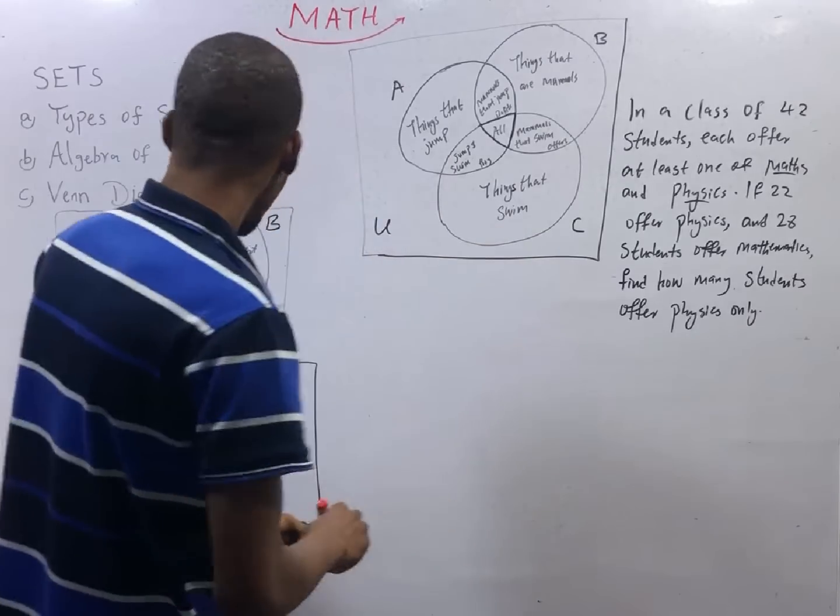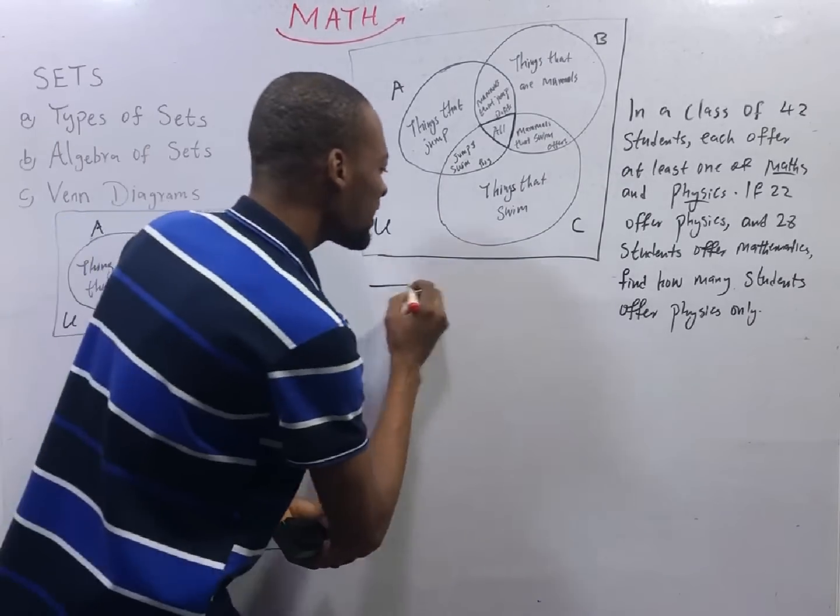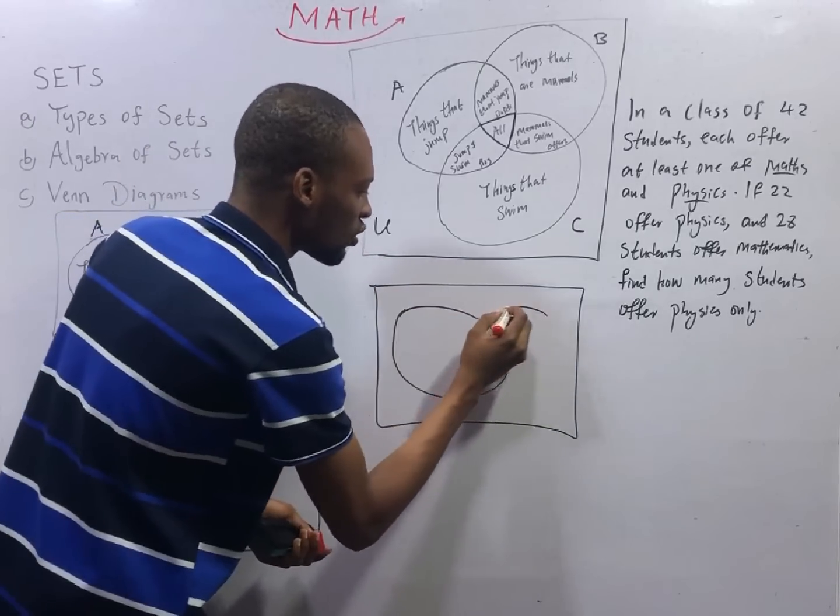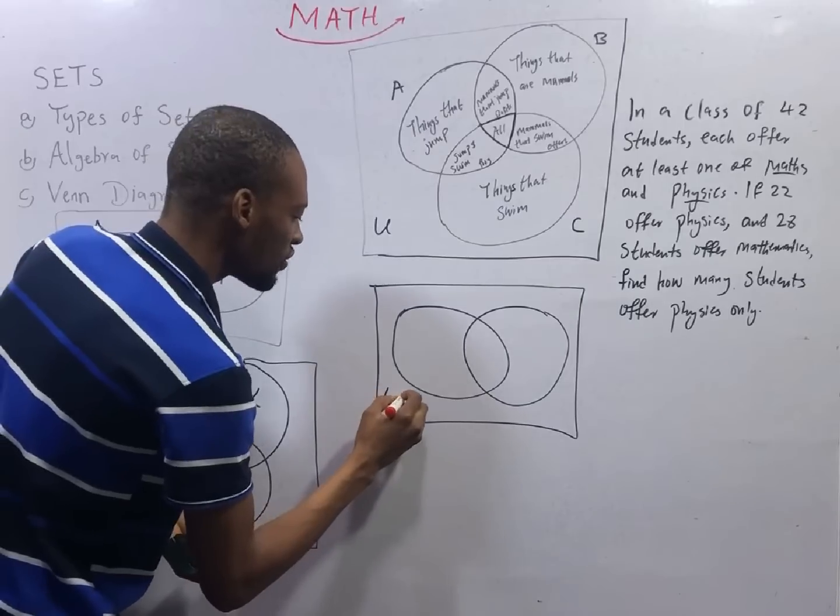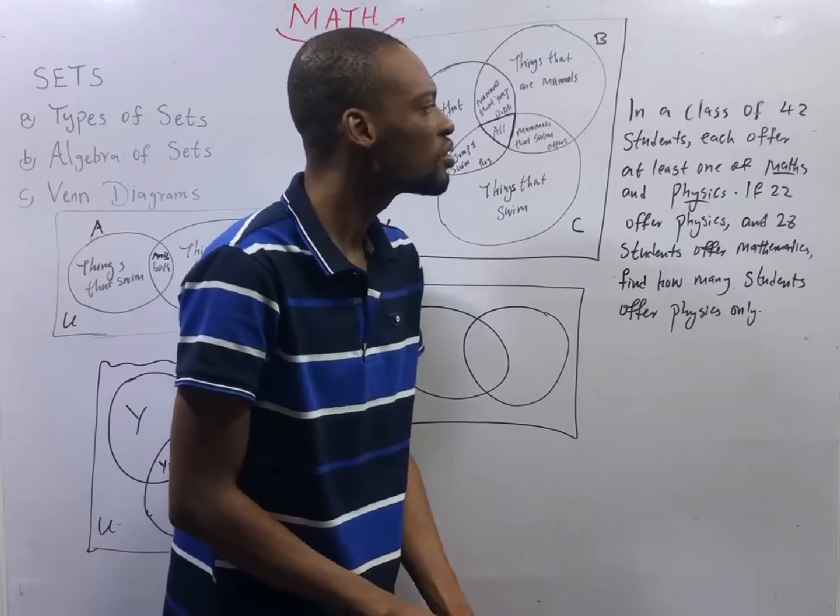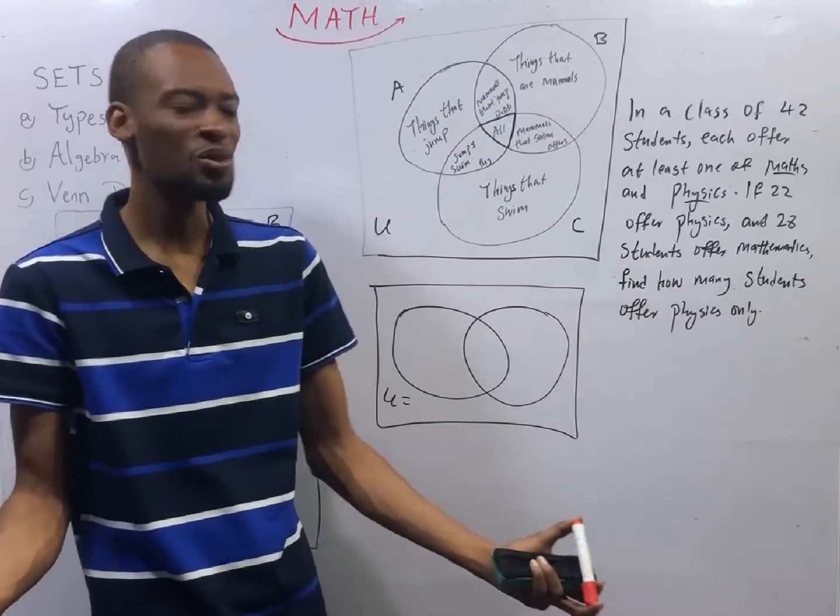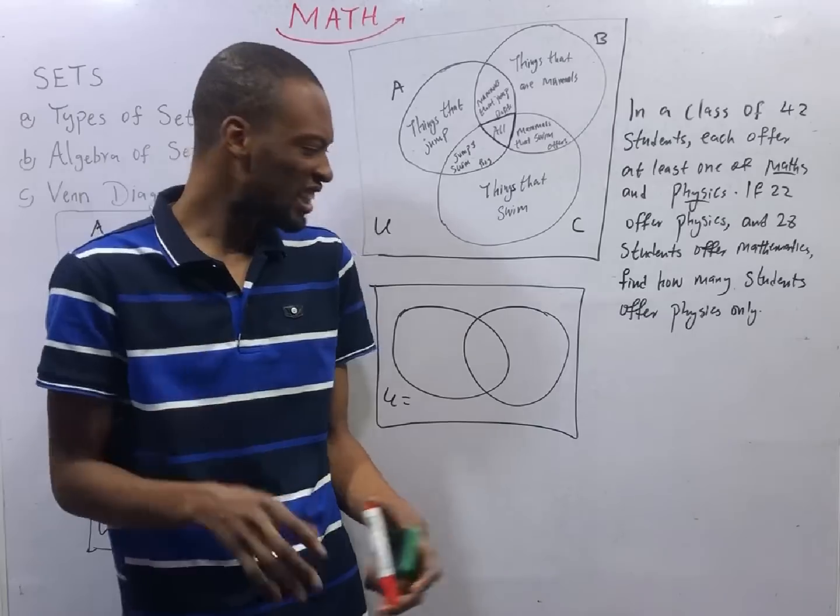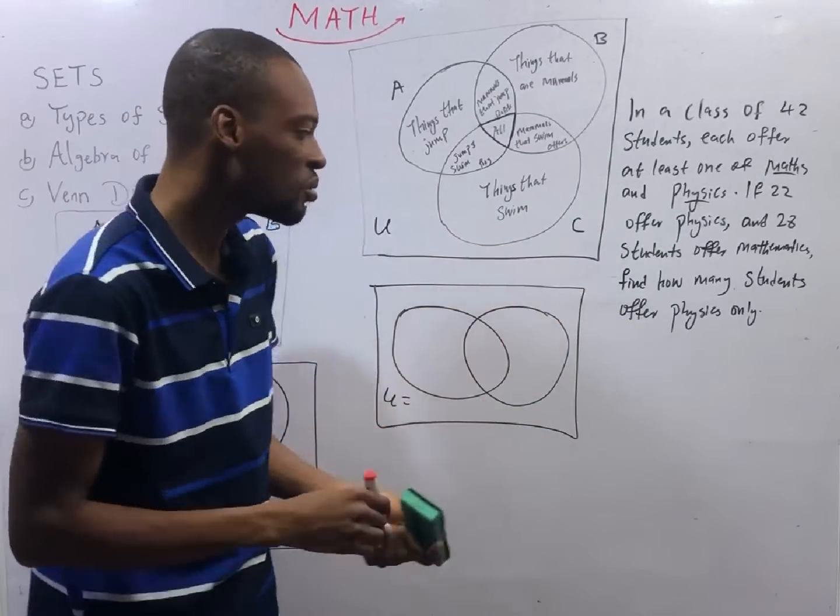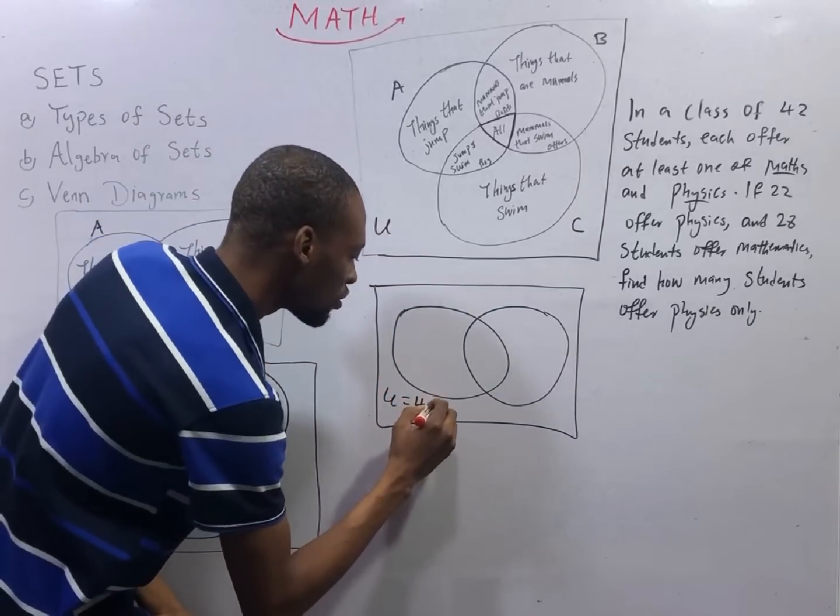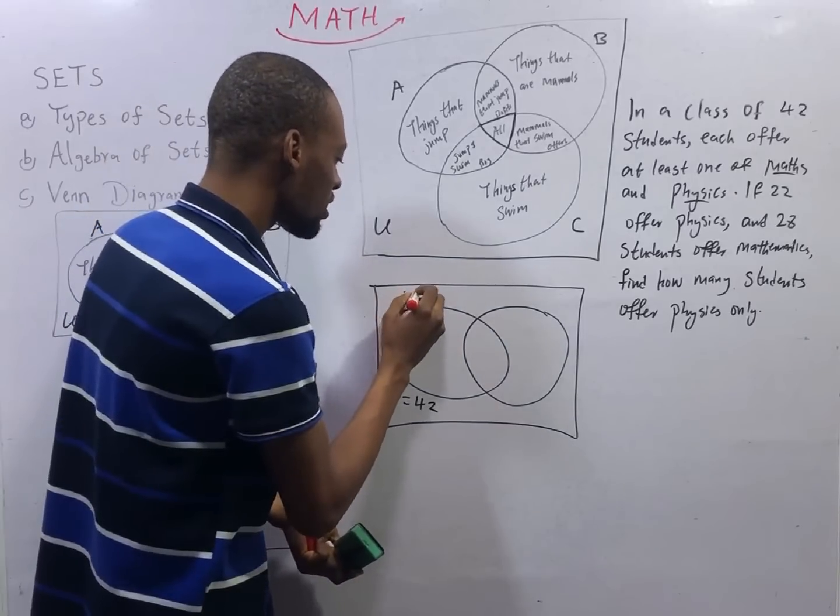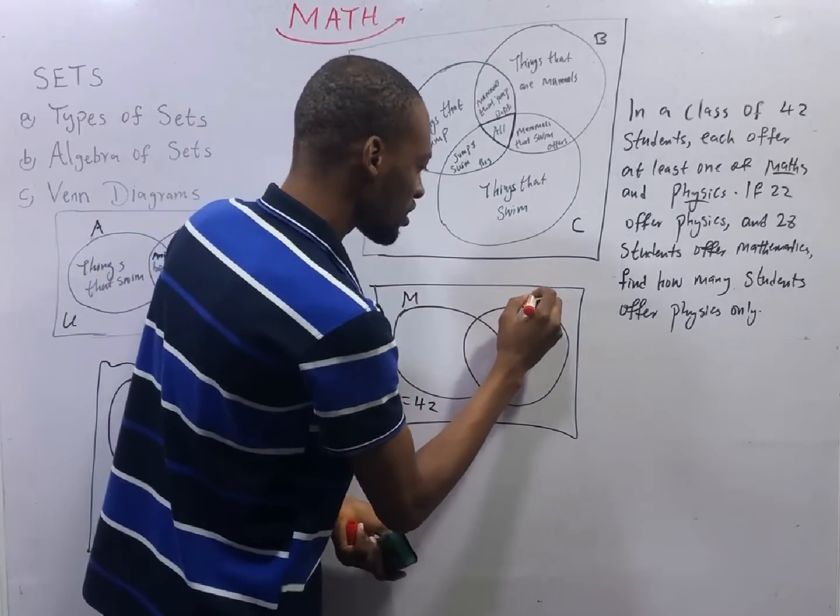So for two sets, the Venn diagram is this. You have something like this, one here and one here. And here is your universal set. We have found that in the class of 42 students, 42 is simply the universal set. That is, the set that contains every other set. So the total number is the universal set, and that will be your 42 here. Since we are dealing with two sets, let here be mathematics M, let here be physics P.